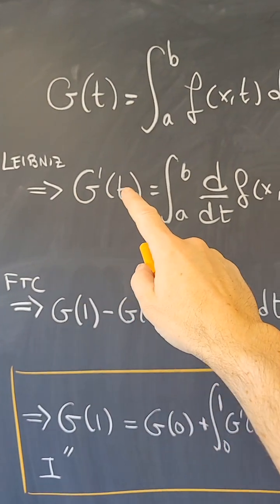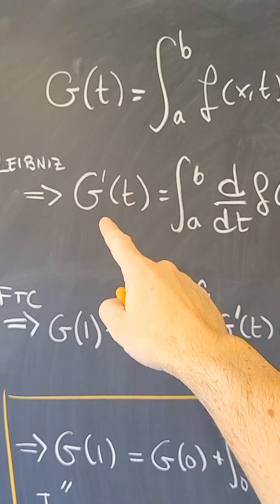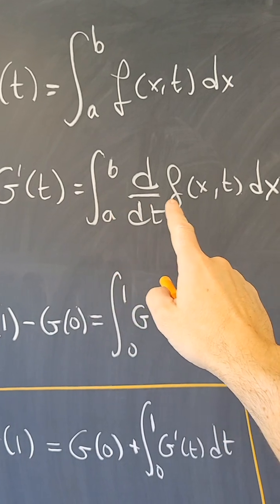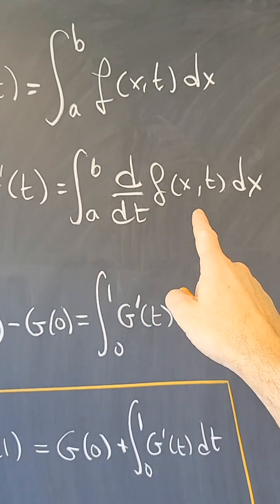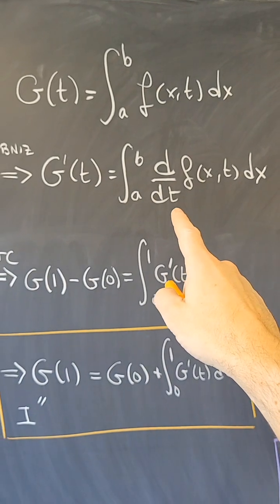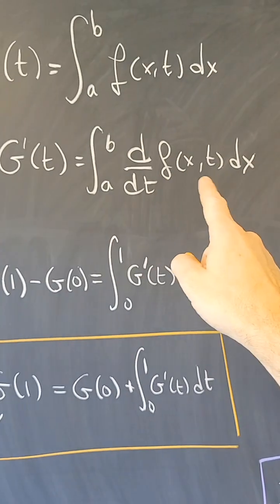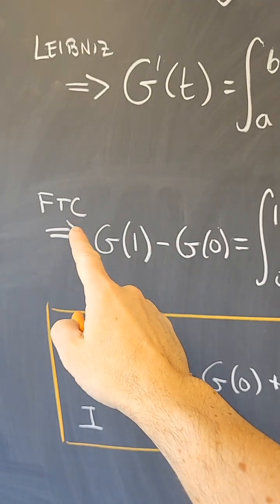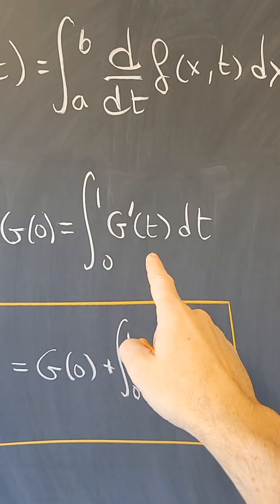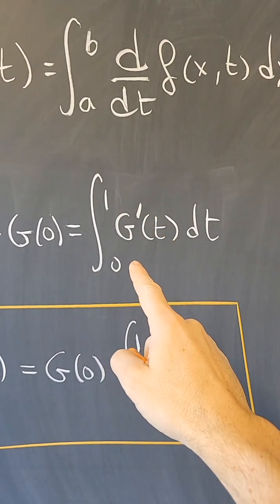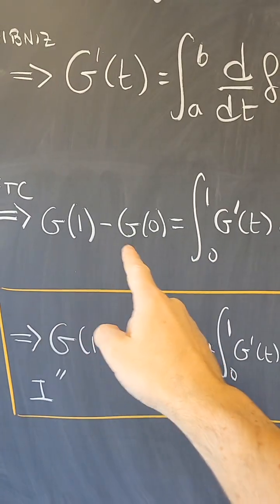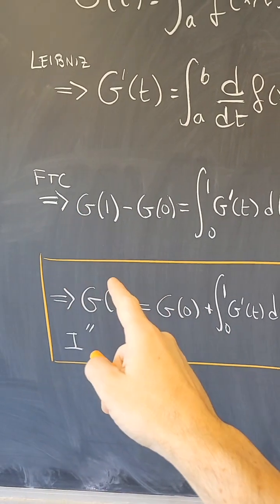In that case, there is a theorem of Leibniz that says that the derivative of g with respect to t is going to be the integral of the derivative of f with respect to t. And that tells me that if this is something that I can integrate, then I can use the fundamental theorem of calculus to integrate g prime, and that's going to tell me that the integral of the derivative is just g of 1 minus g of 0 by the fundamental theorem of calculus.